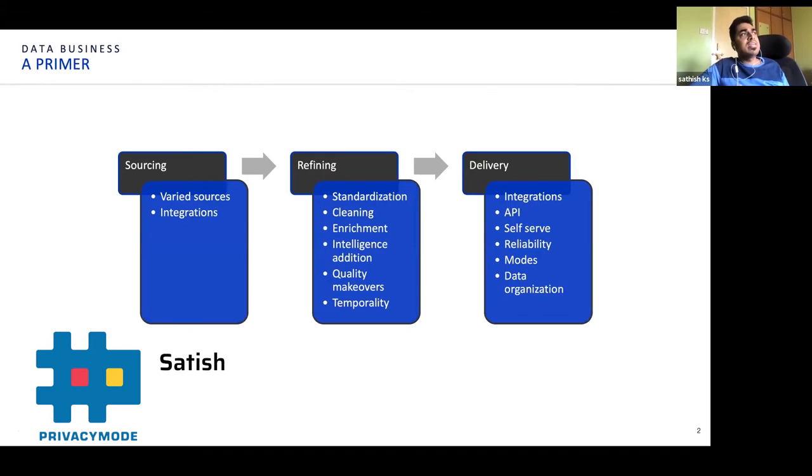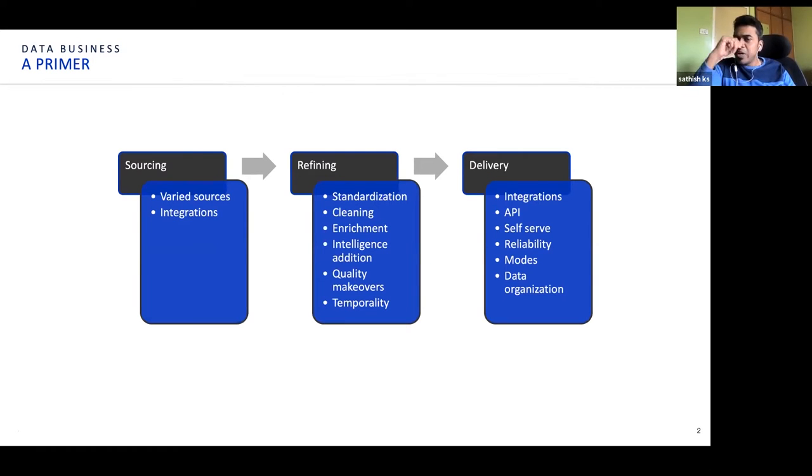Primer in any data processing, be it a data business, whether you're running data as a service, or even if you're in some other domain, if you're having data processing pipelines, what exactly happens there? So there are three pillars to this whole data aspect.